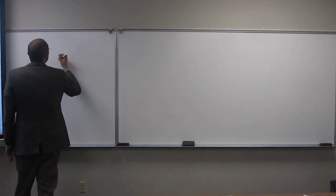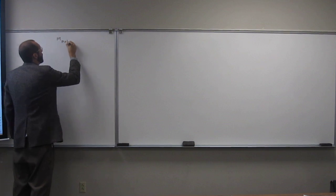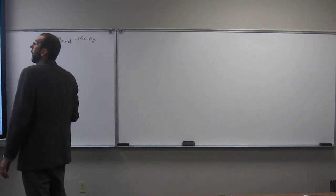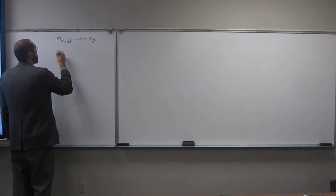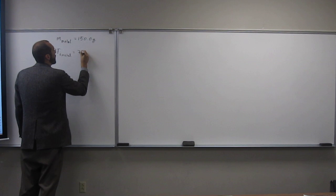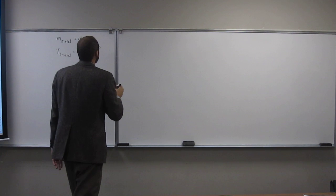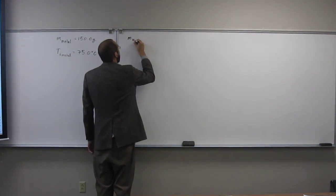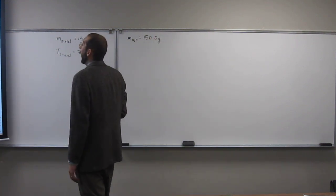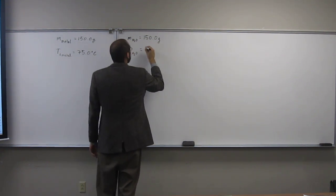So they say 150 gram sample of metal. So we know the mass of the metal at 75 degrees Celsius. So they give us the initial temperature of the metal, 75.0 degrees Celsius. It's added to 150 grams of water. So they give you the mass of water, 150.0 grams at the initial temperature of water, which is 15 degrees Celsius.